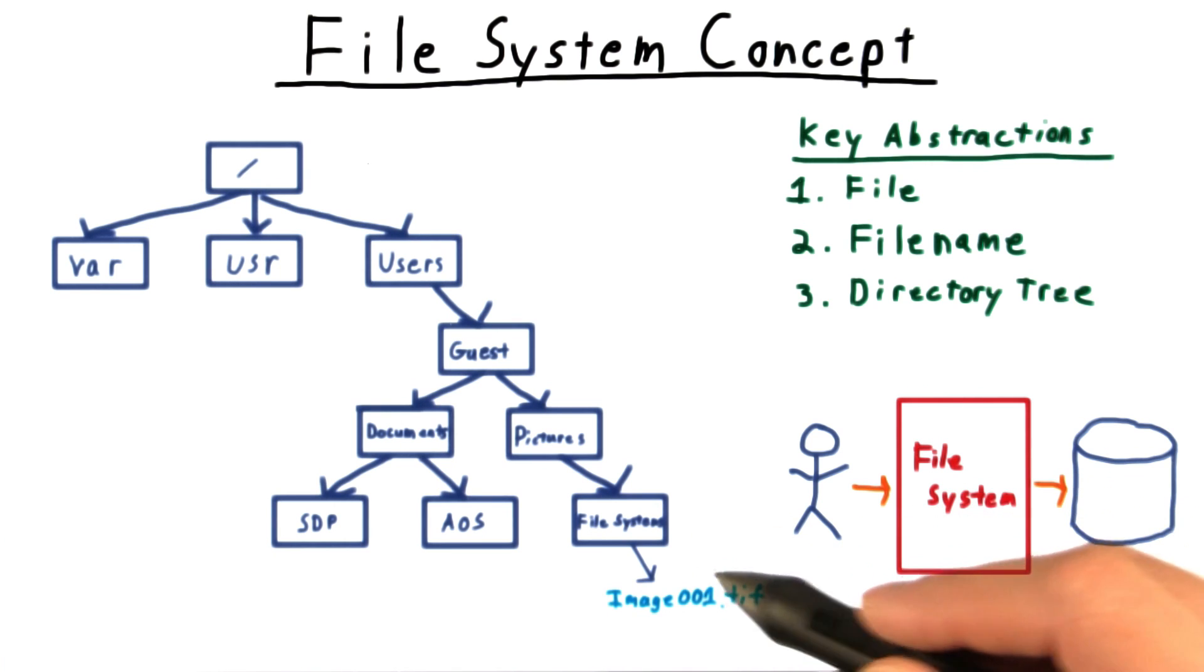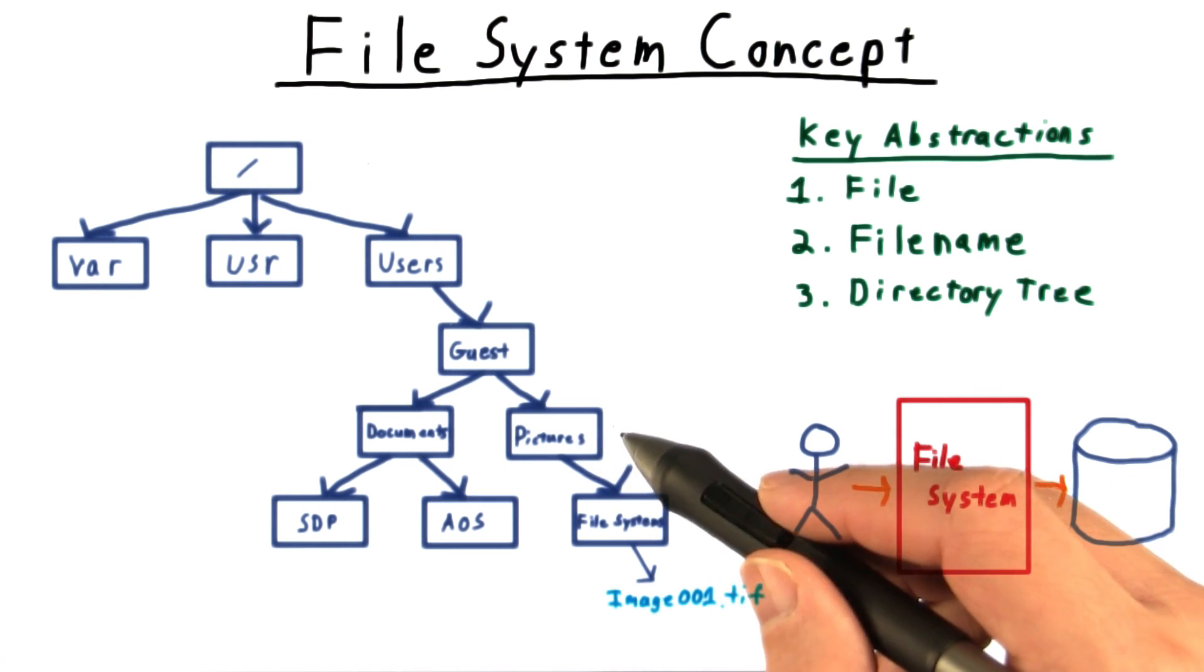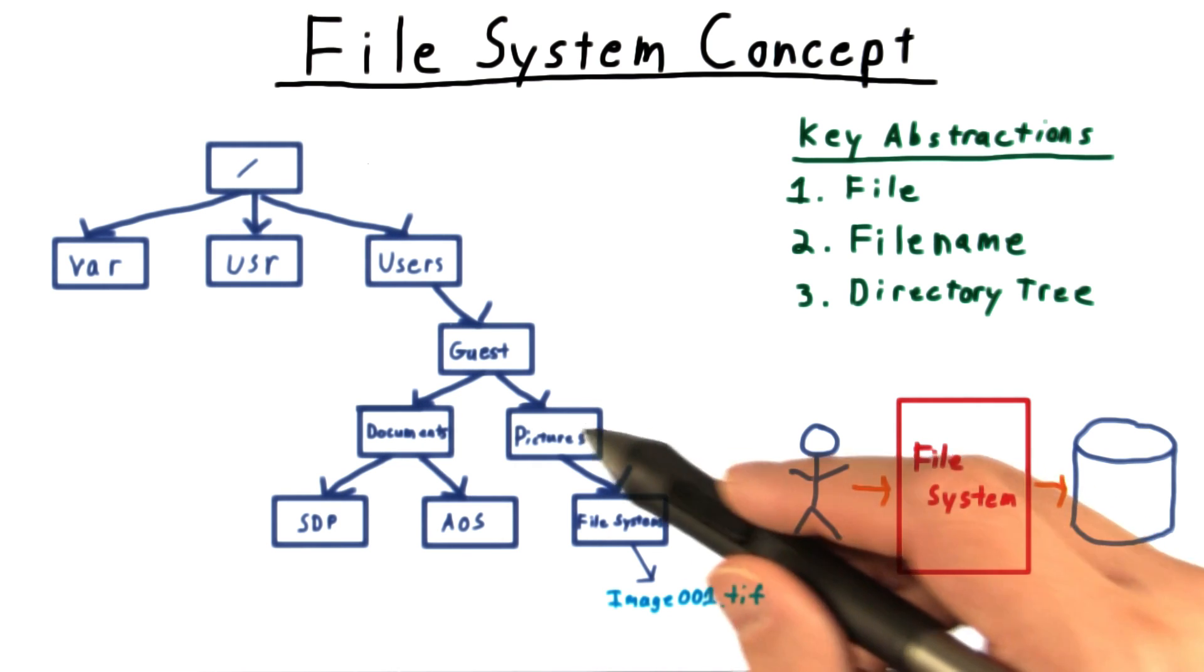File systems, for instance, is the parent directory of image001.tiff. Pictures is the parent directory of file systems, etc.